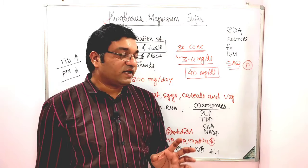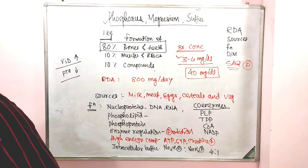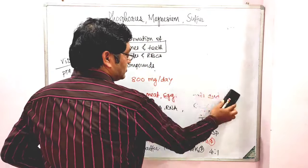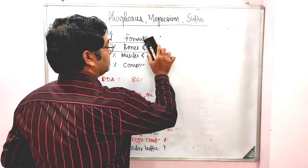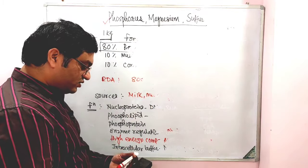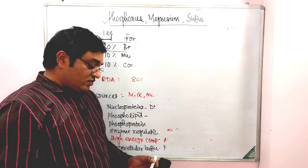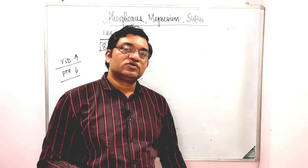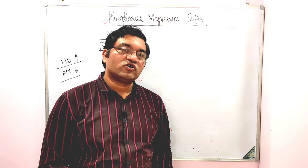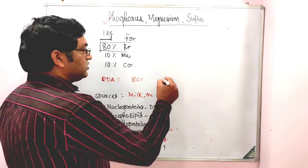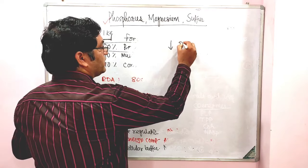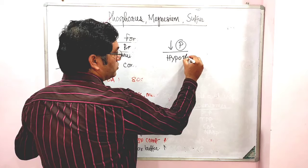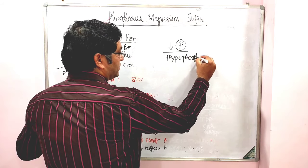Now, what are the deficiency manifestations? Deficiency manifestations are very rare because phosphorus is present in every cell, so dietary deficiency of phosphate is very rare. Decrease in phosphorus level is known as hypophosphatemia. It is mainly due to malabsorption, malnutrition, decrease intake or decrease absorption, Vitamin D deficiency (rickets), and hyperparathyroidism.